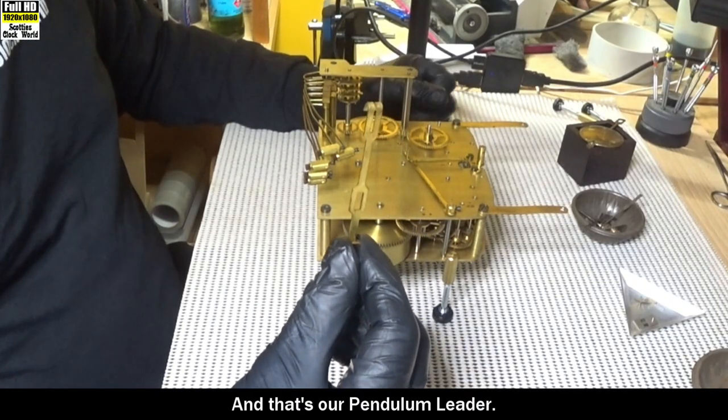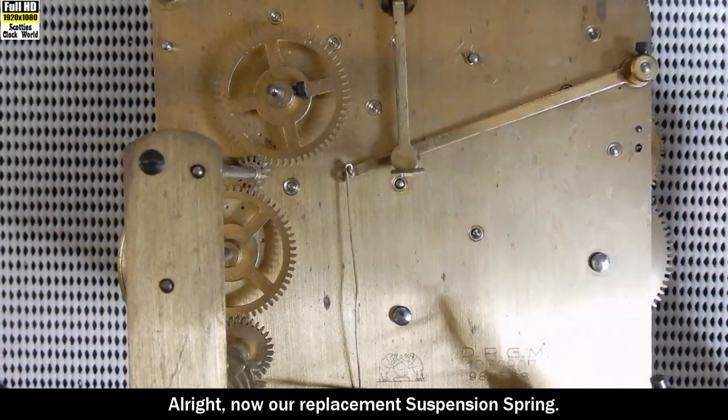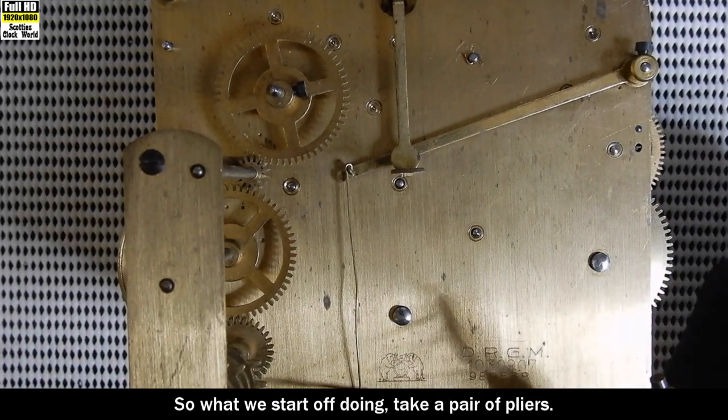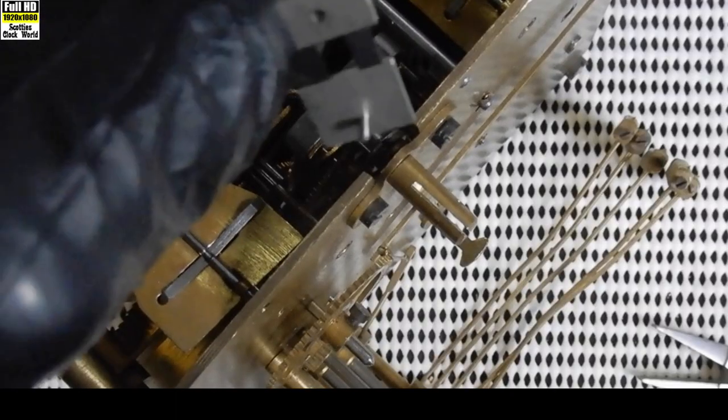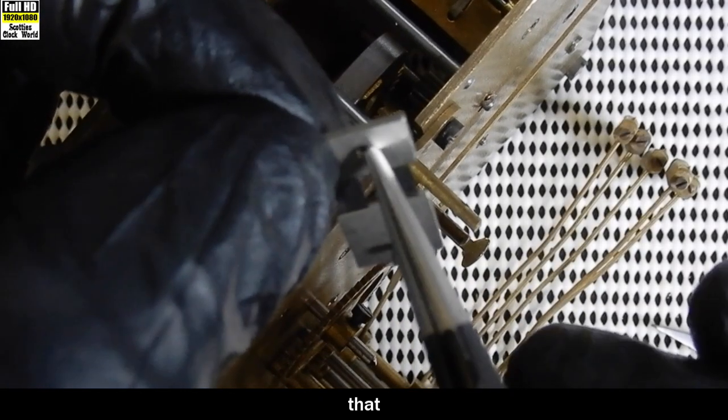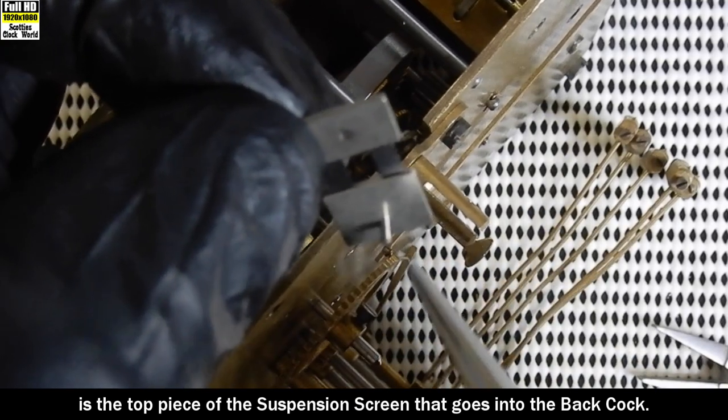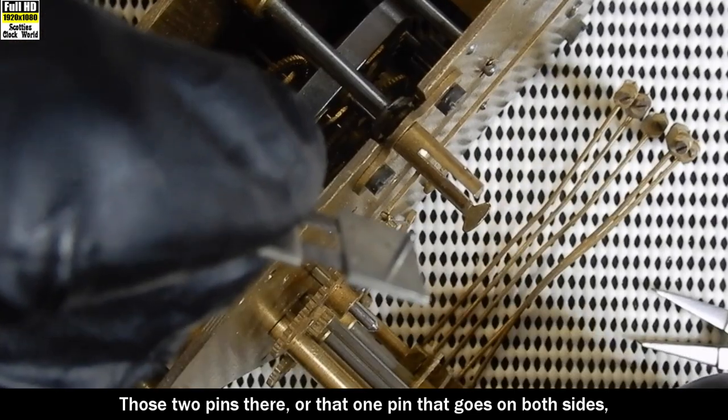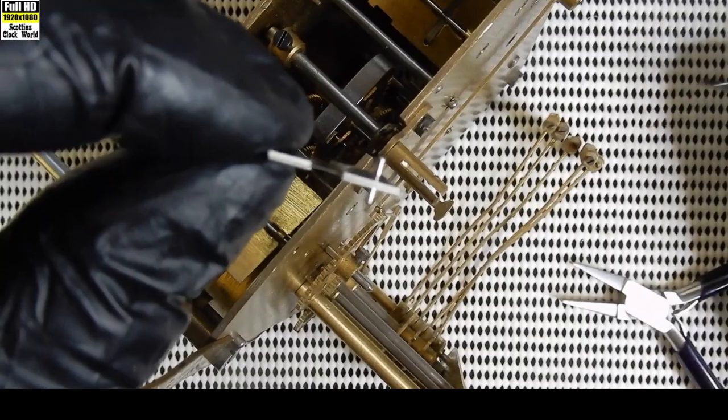And that's our pendulum leader. Now, our replacement suspension spring. What we start off doing, take a pair of pliers. By the way, that is the top piece of the suspension spring that goes in the back cock. Those two pins there, or that one pin that goes on both sides, is what holds the pendulum leader.